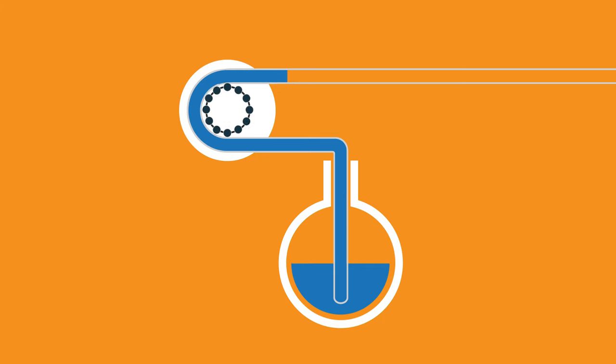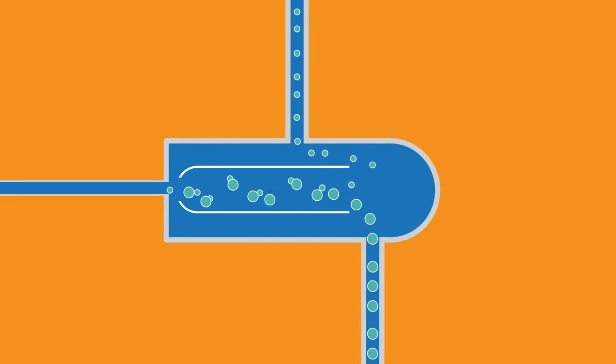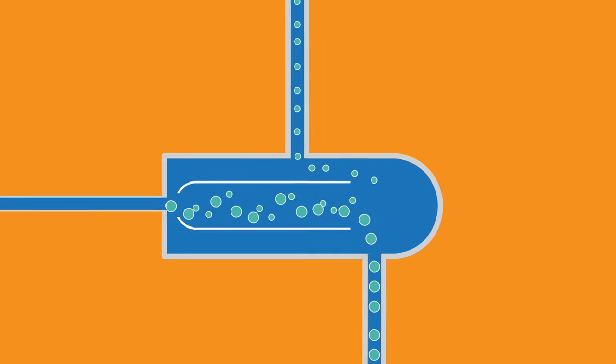The liquid sample is drawn into the peristaltic pump. In the nebulizer, it's converted into a fine aerosol spray. In the spray chamber, larger droplets drain away, but finer droplets are directed into the hot plasma.